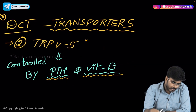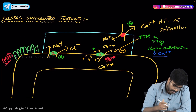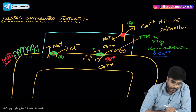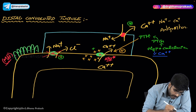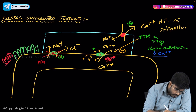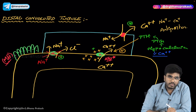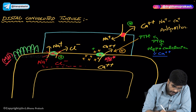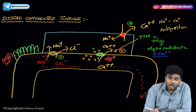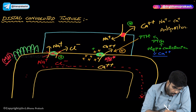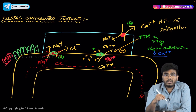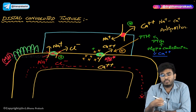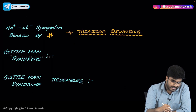To repeat: if you give thiazide diuretics, the sodium-chloride symporter is blocked. Sodium reabsorption is not happening, chlorine reabsorption is not happening. All the sodium and chlorine are lost in the urine, water follows the solutes and comes out — causing diuresis. Thiazide diuretics act on the sodium-chloride symporter.